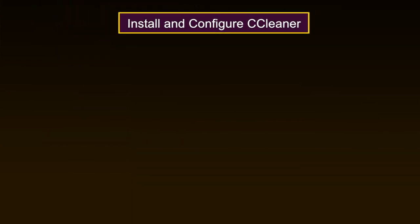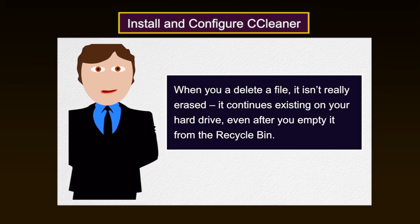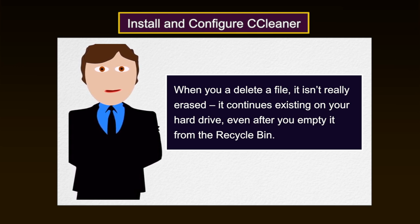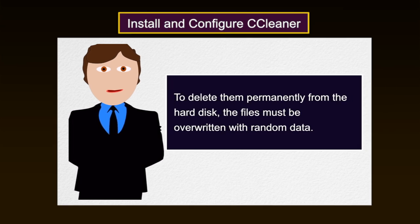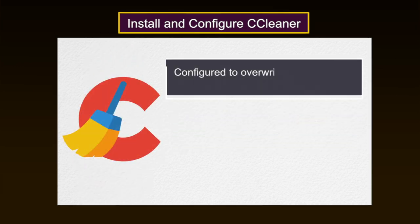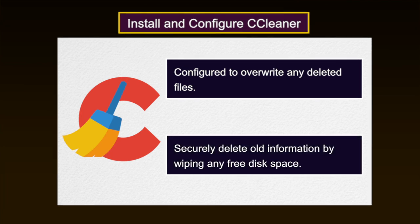Now let us discuss how to install and configure CCleaner. The Microsoft Windows standard file deletion methods do not erase the actual data from the disk, even when you have emptied the recycle bin. This also applies to temporary files. To delete them permanently from the hard disk, the files must be overwritten with random data. CCleaner must be configured to overwrite any deleted files in order to securely delete them, as it will not do so in default mode. CCleaner can also securely delete old information by wiping any free disk space.